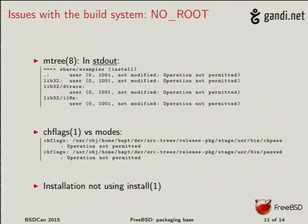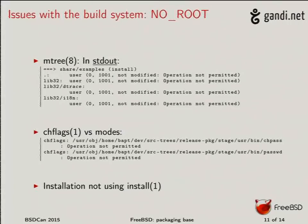Now we have a couple of issues. An audience member asks whether this can be done at a subdirectory level or if it has to be at a top-level Makefile. Yes — SVN-lite is done like that: you go into the top-level Makefile.inc and everything automatically goes into the svn-lite package.